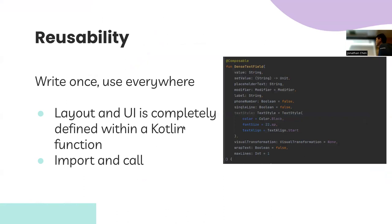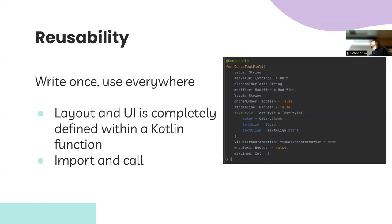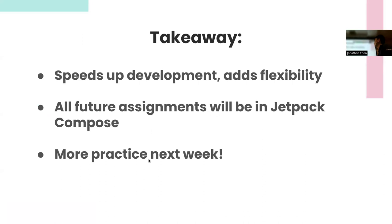Because you're writing functions, you can write parameters for them, so you can keep reusing the same card. If you want a card with a different label, you just change the label parameter and call it again. The takeaway is that Jetpack Compose speeds up development and adds flexibility. After Homework 3, we're going to be transitioning into Jetpack Compose. We'll get a lot more practice on Wednesday, and an extra YouTube demo will be released to get us up to speed for Homework 4.